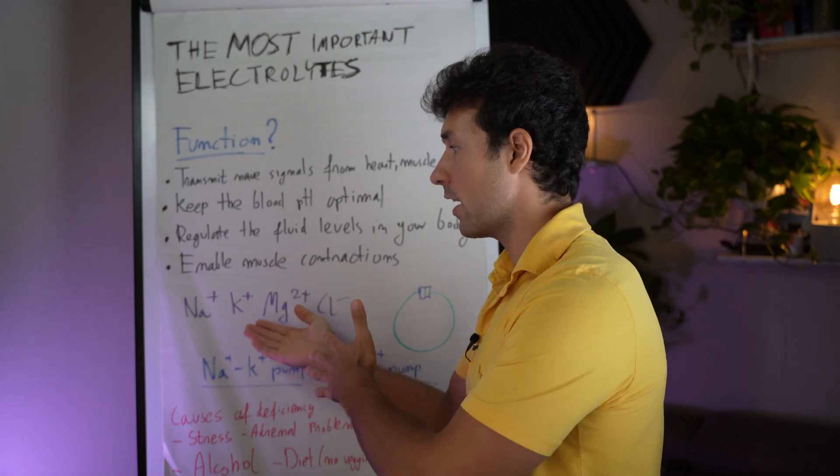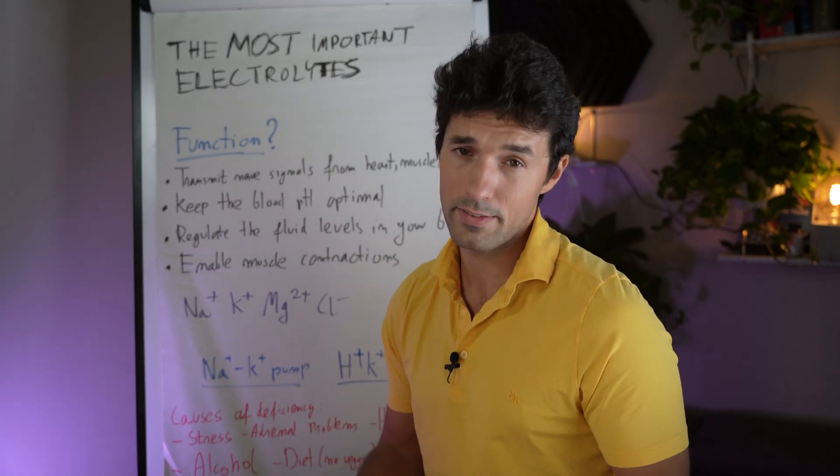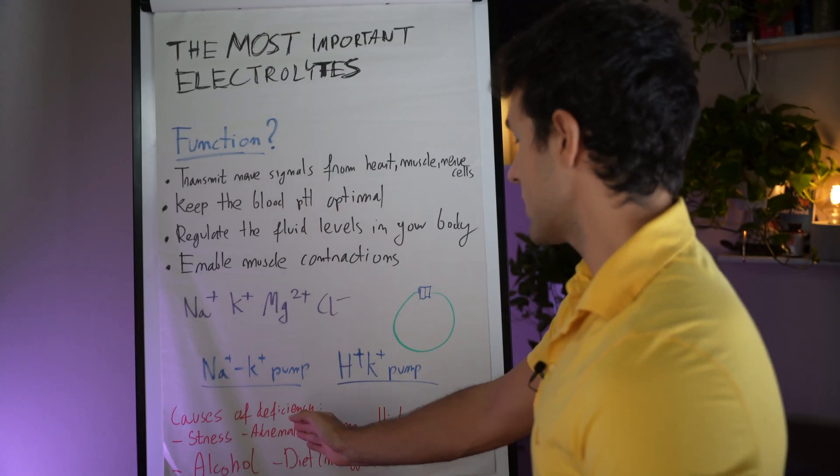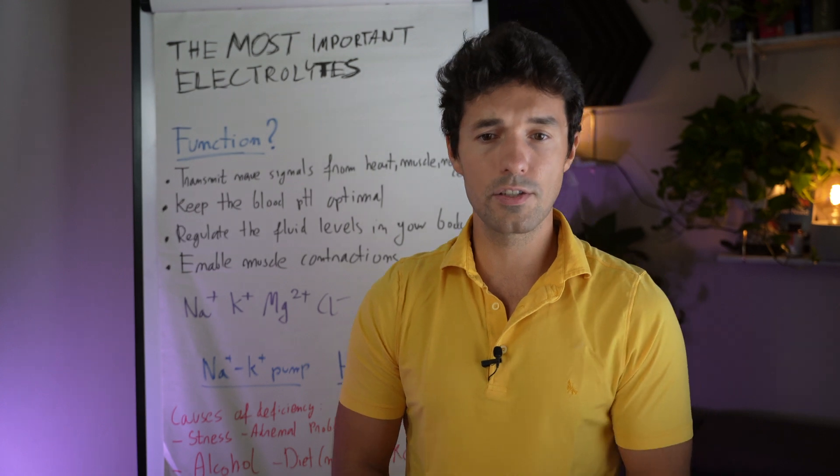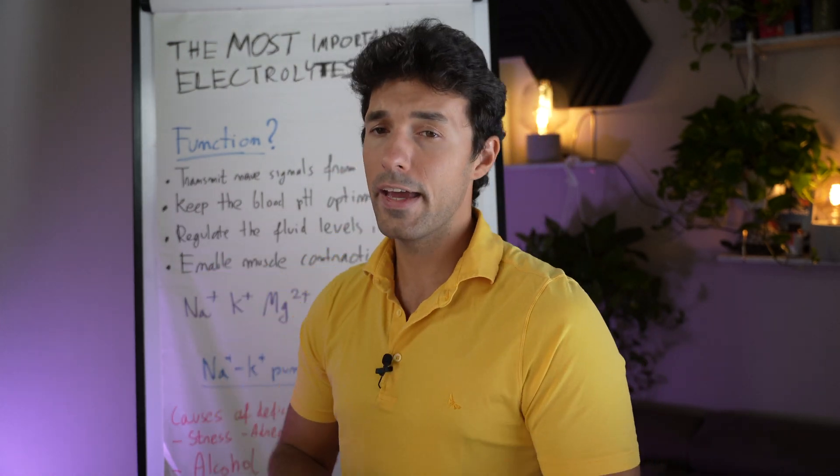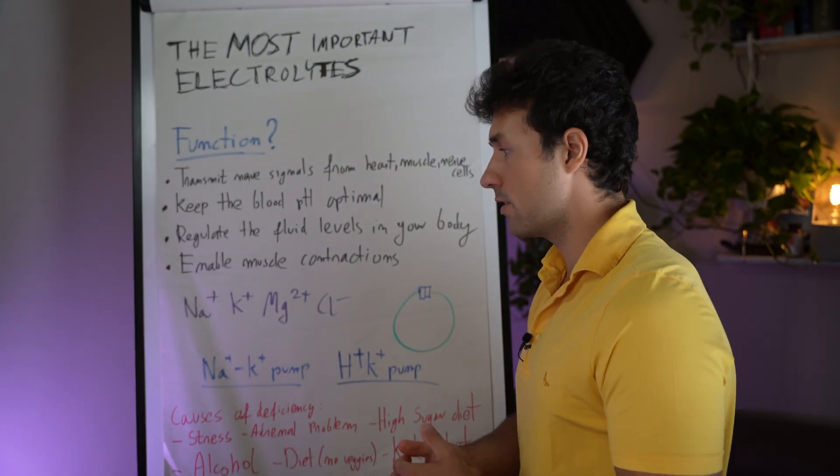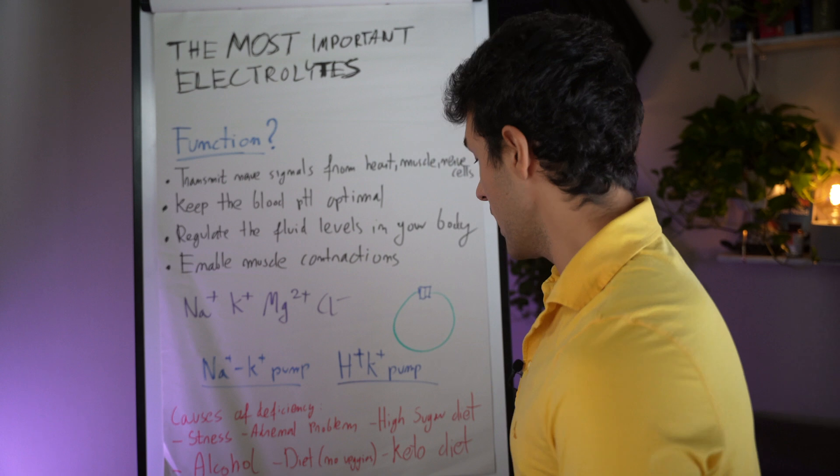Another one is diet without veggies, like for example green leafy veggies which are full in potassium but also other minerals. And if you don't eat this kind of veggies, this may eventually cause deficiency and that's why you have the symptoms.